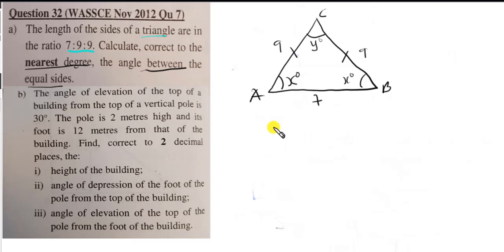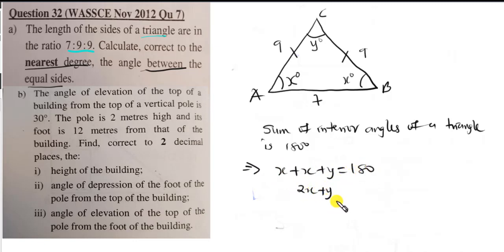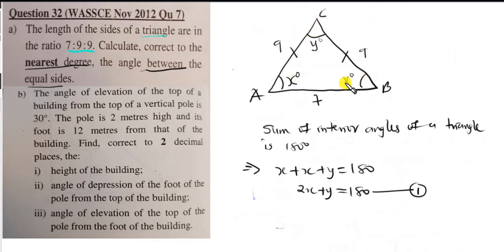Using the sum of interior angles of a triangle equals 180 degrees: x plus x plus y equals 180, so 2x plus y equals 180. This is equation 1. I need two equations since I have two variables x and y. To find y (the angle between the equal sides), I'll use the sine rule to establish a second equation.